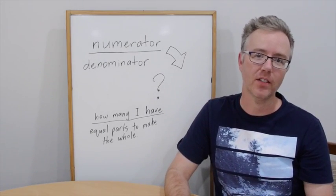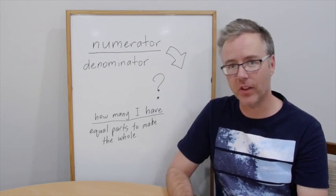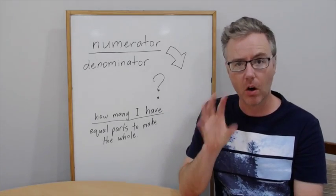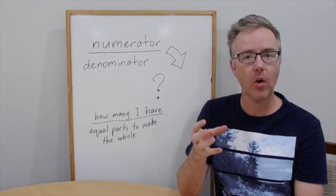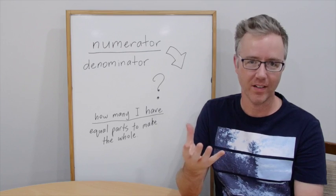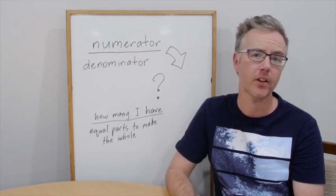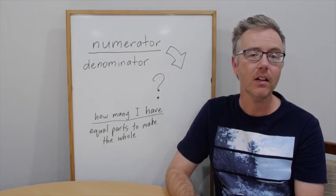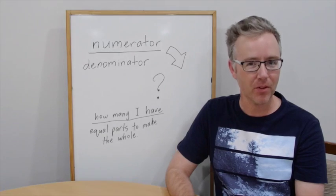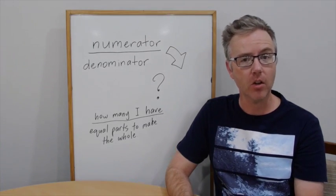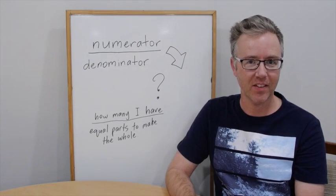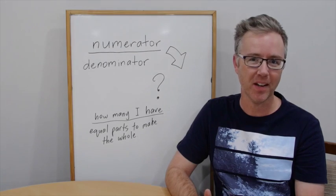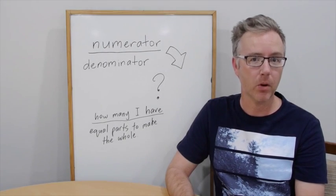I'm using a pen so that you can see what I'm doing today. A little bit of background information: we need to understand what a whole is. In maths, whole refers to one. The second thing we need to understand is numerator and denominator. Numerator is the number at the top of the fraction line. Denominator is the number beneath the line — denominator down, the D for denominator is D for down. It's the bottom number.